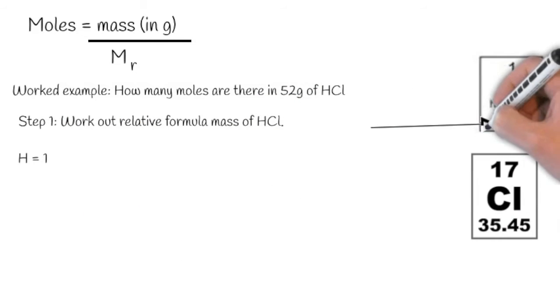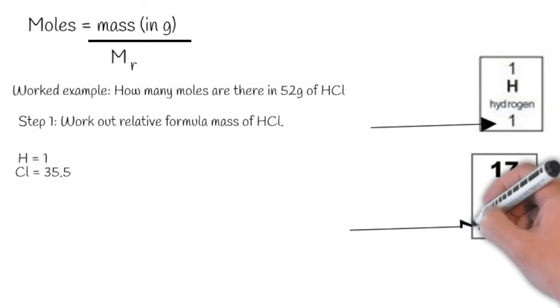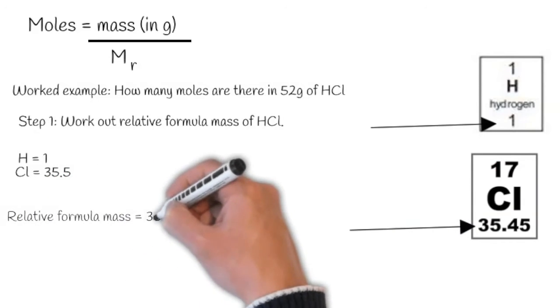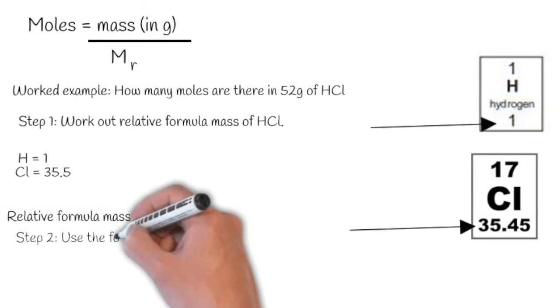There is one H, and that has a mass of one, and chlorine is 35.5. Relative formula mass, remember we need to add these together, so it's 36.5.